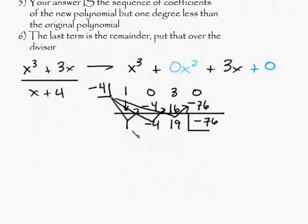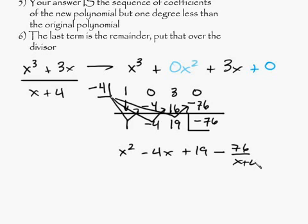It's going to be 1 degree less than what you started off with. So coefficients are 1, negative 4, and 19. And this is your remainder. So you're going to end up with x squared minus 4x plus 19. You can either write minus 76 over x plus 4, or you can write it as x squared minus 4x plus 19 plus negative 76 over x plus 4. Either one is fine.